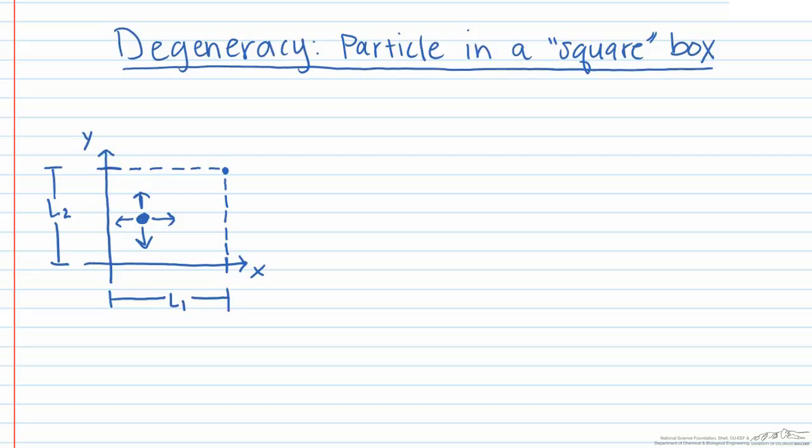In this screencast, we are going to discuss a special feature that can arise called degeneracy, that's usually related to the presence of symmetry in a system. To demonstrate this, let's revisit our particle in a two-dimensional box.